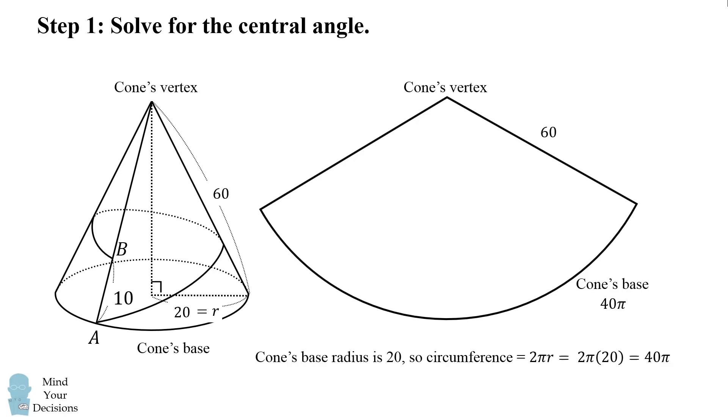So that's the length of the circular arc. Now we know the radius of the circular arc is 60. This is capital R or the slant height of the cone. Now there's a formula that relates the radius of the circular arc, its central angle, to its length.